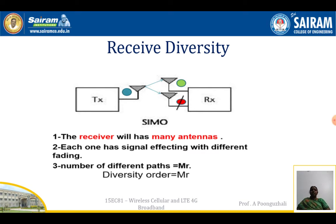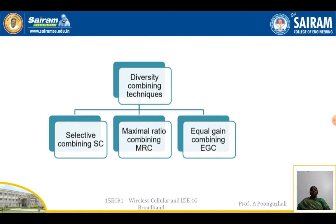The receiver will have many antennas. When the transmitter transmits, the signal is going to be received by both antennas. When the receiver antennas receive the signal, there will be different effects of fading. The number of different paths is based on the diversity order — that is, how many antennas I am going to use at the receiver. Here I have two, so the diversity order is two, which is equivalent to Mr.